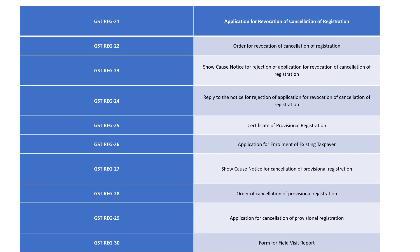GST REG-22 is the order for revocation of cancellation of registration. GST REG-23 is the show cause notice for rejection of the application for revocation of cancellation. GST REG-24 is the reply to that notice for rejection of application for revocation of cancellation of registration.